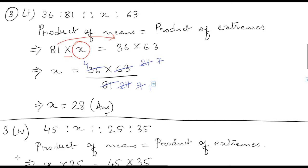We will leave X on this side and take 81 to the other side, so we have X is equal to 36 into 63 divided by 81. Now if you solve this, you will get X equals to 28. So the value of X is 28.